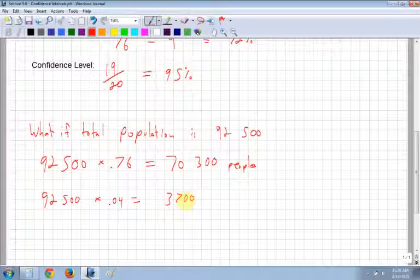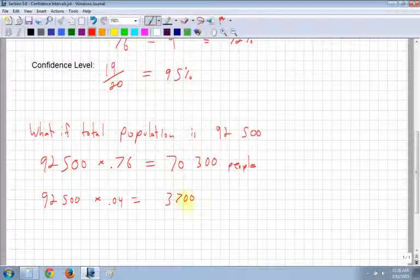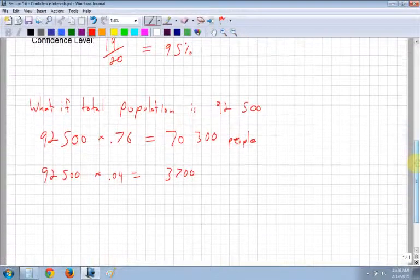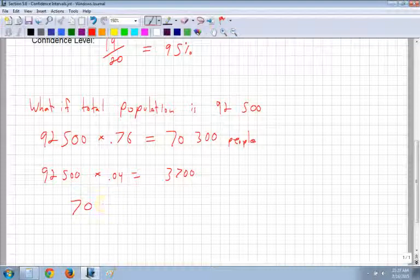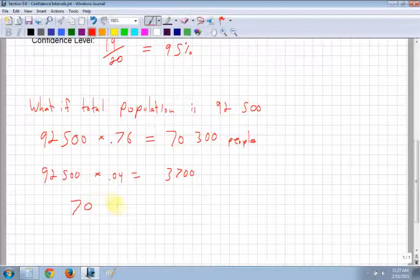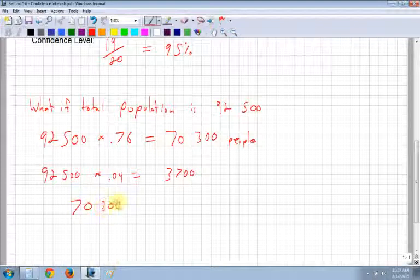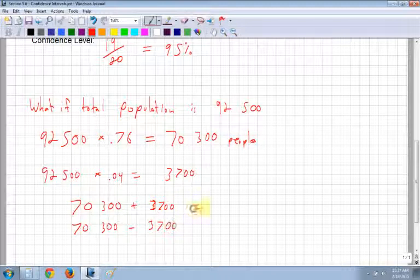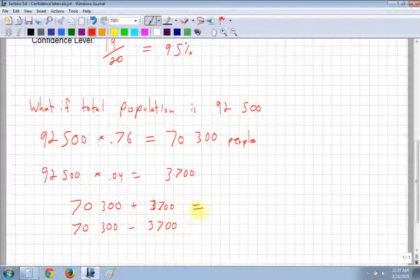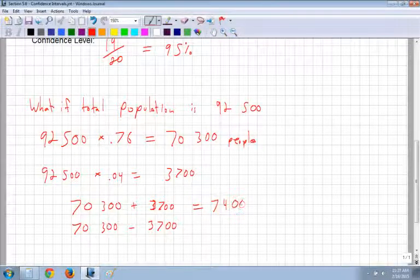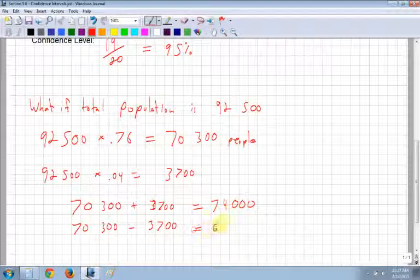Now, that's how many people we could be off by, plus or minus. So if we're looking at a range of people, then we have to say it could be 70,300, which are how many people we're saying have social networking, plus 3,700. And 70,300 minus 3,700. So plus 3,700 is going to be 74,000. And minus is going to be 66,600.